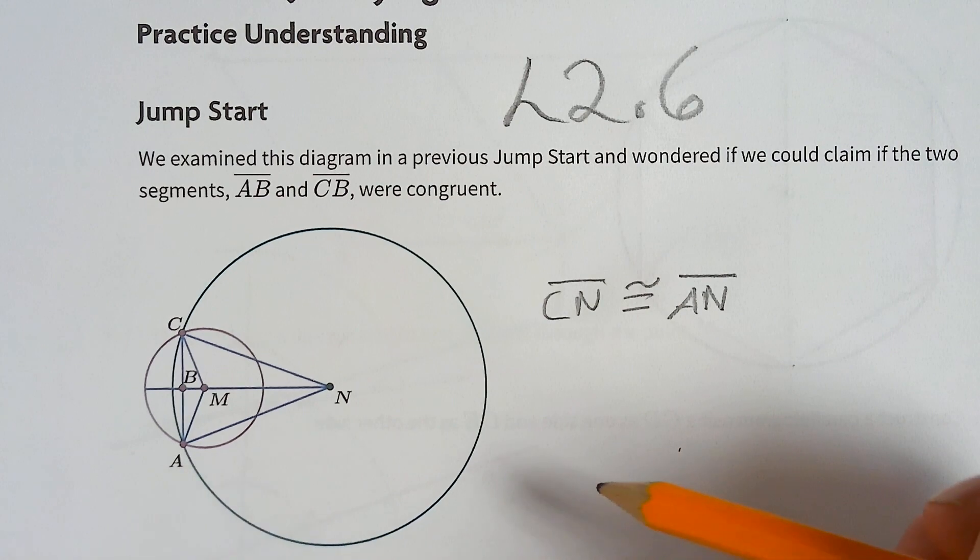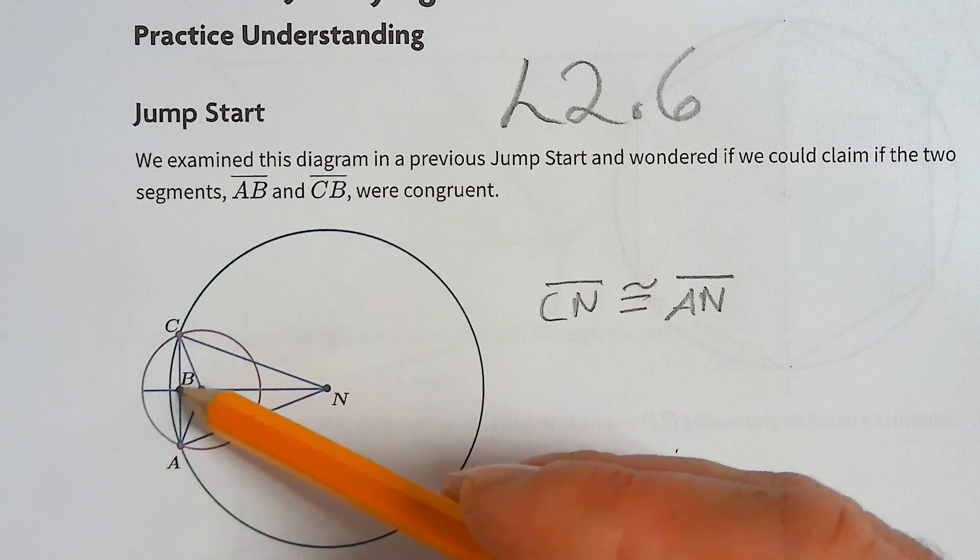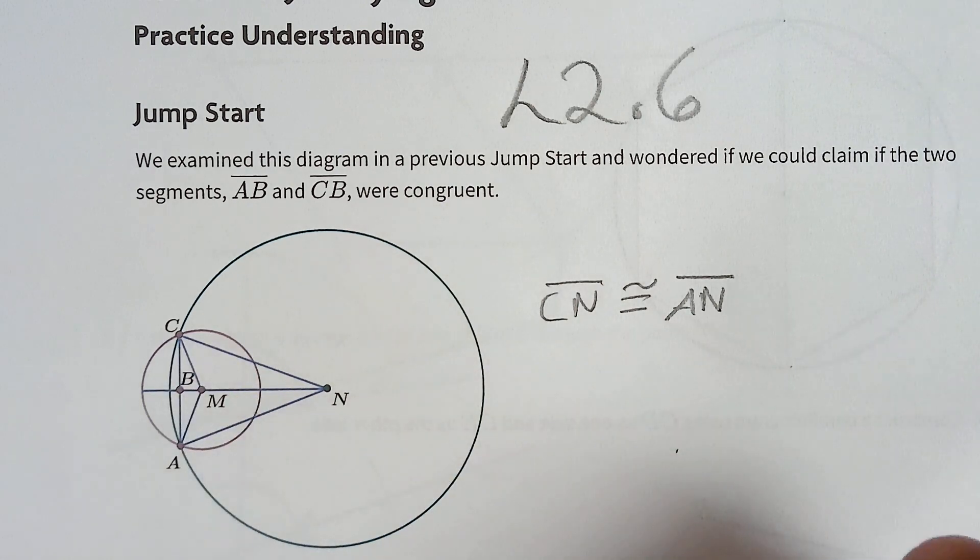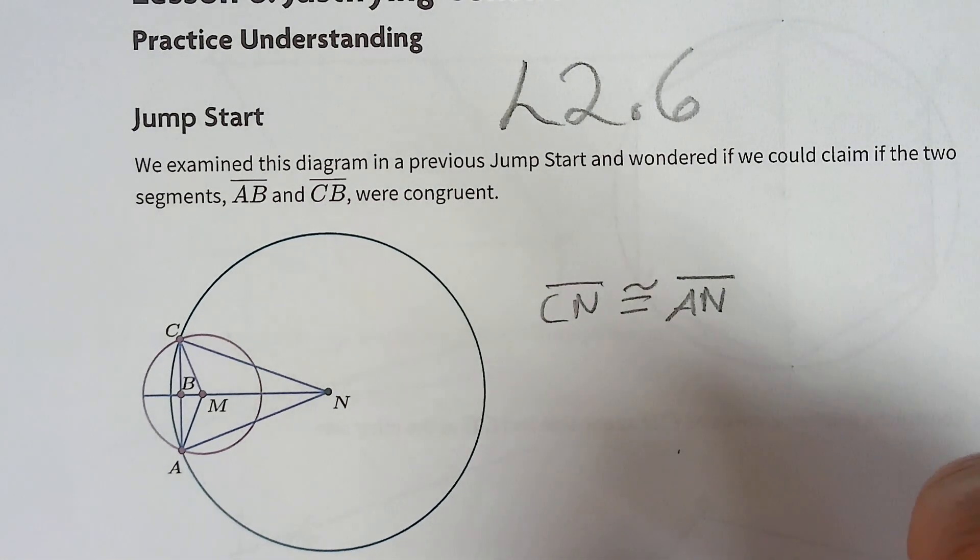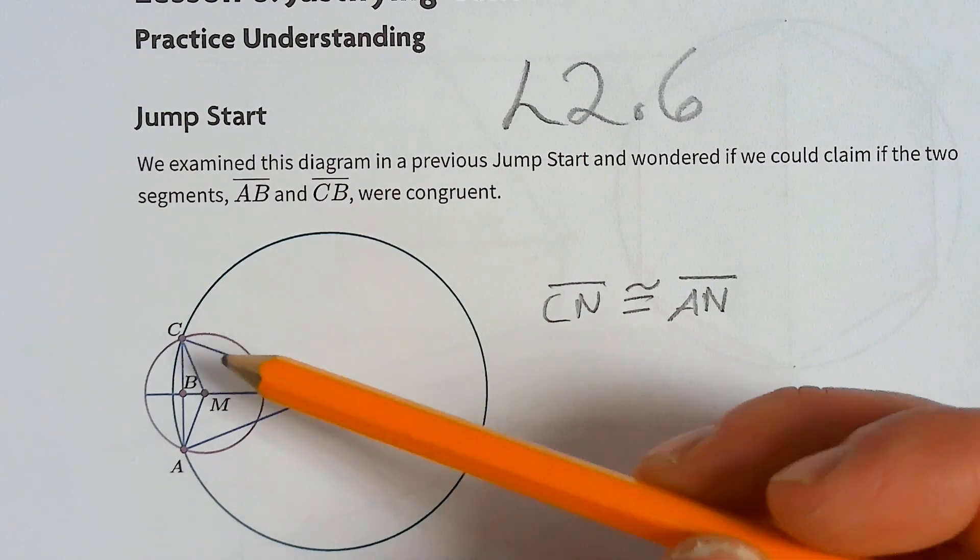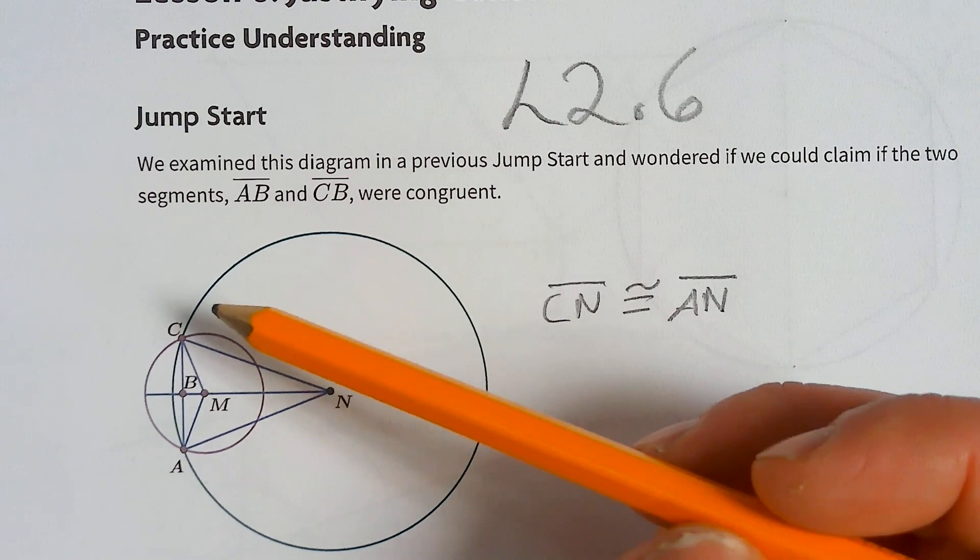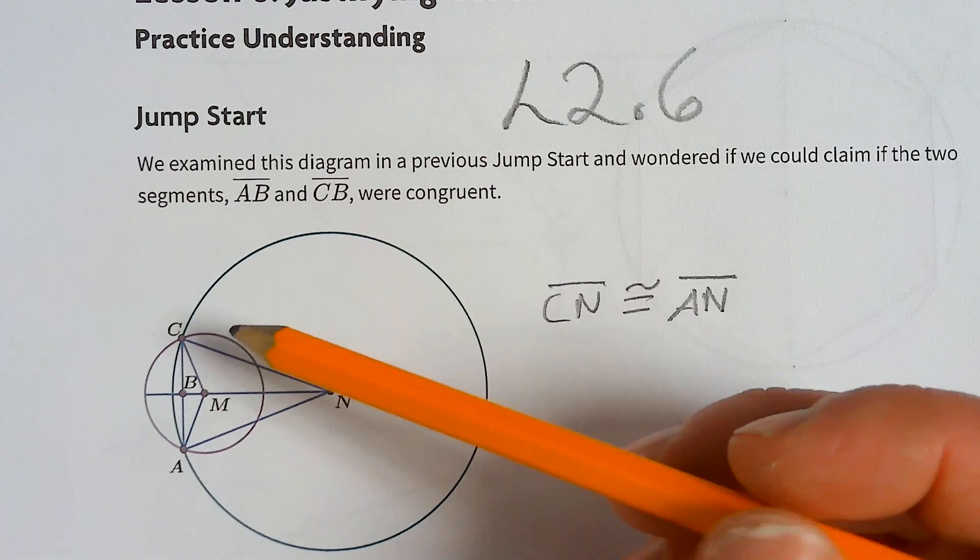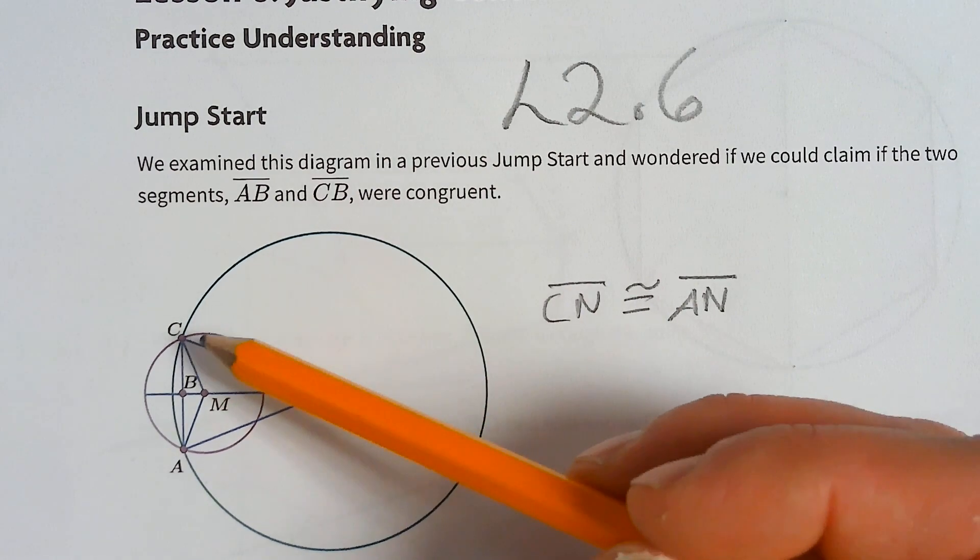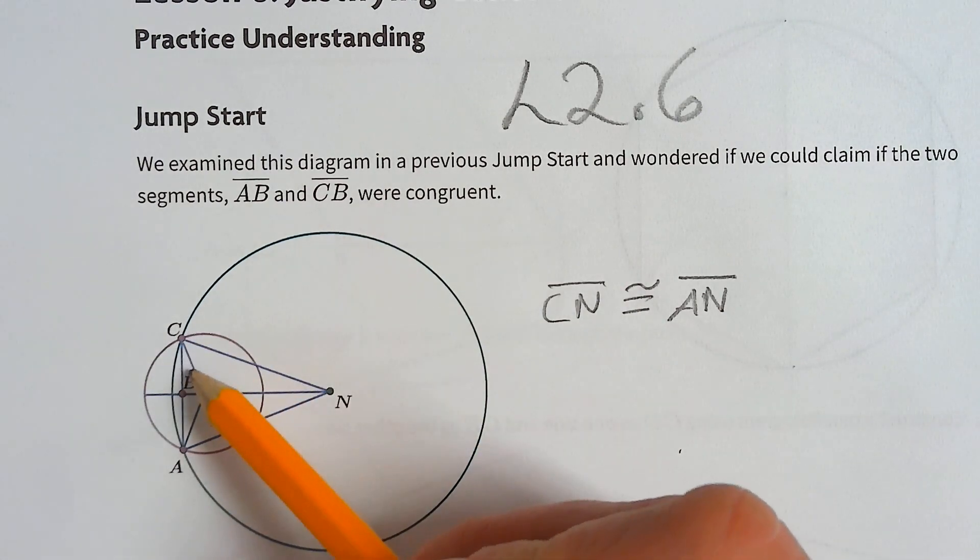Because they're both radii of the circles, but we were trying to get to CB and AB. They're not radiuses of any circles, so how could we prove that they're the same? Well, we could use CPCTC. If we could prove that they're part of a triangle that is congruent to each other, then we could say that they are congruent.